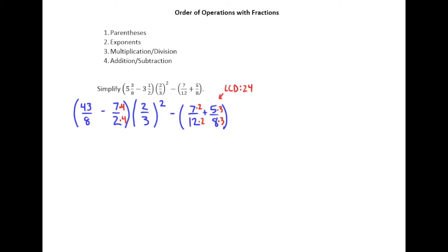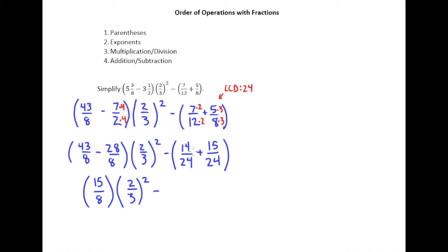So again, I'll rewrite everything I haven't changed in the next step. So 43/8 minus 28/8 times 2/3 squared minus in parentheses 14/24 plus 15/24. So now I can actually perform the subtraction and addition in my two sets of parentheses. So 43 minus 28 is going to give me 15. So I have 15/8. Still rewriting the times 2/3 squared even though I haven't done anything with it yet. Minus 14 plus 15 is 29. So minus 29/24. Okay, so we've taken care of everything that was in parentheses.